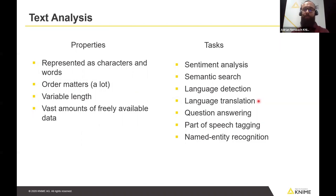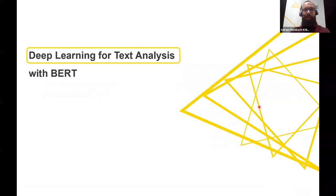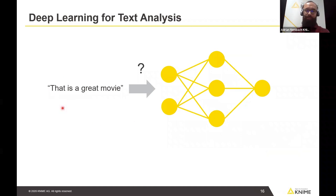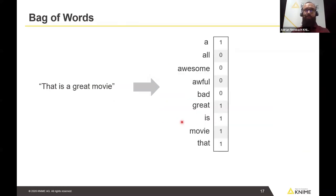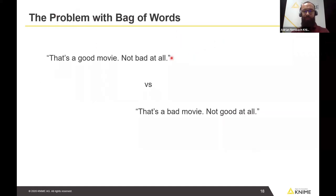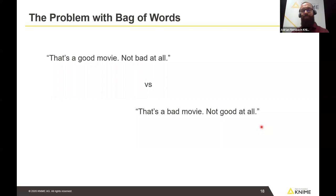The first challenge is that text consists of characters and words, not numbers, but our network expects numbers as inputs. A straightforward approach is the bag-of-words method: we create a dictionary, assign each word a position in a vector, and set that position to 1 if the word is present. The problem is that 'that's a good movie, not bad at all' and 'that's a bad movie, not good at all' have the exact same bag-of-words representation, but opposite meanings — so the network cannot distinguish between them.